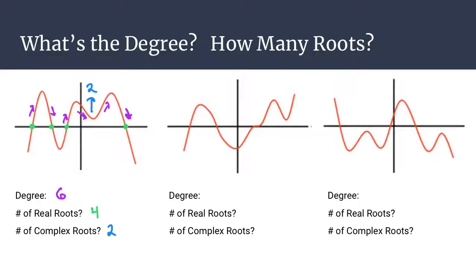For the second example, looking at the number of directions it travels, there are seven different directions, so the degree is seven. For the number of real roots, there are one, two, three different x-intercepts, so there are three real roots. It does not matter that one of those real roots is a triple root — it's just the number of x-intercepts that counts. Looking for complex roots, which are parabolas opening away: several pieces open toward the x-axis, but one opens away, and that gives us two complex roots.